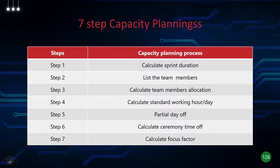Now, capacity planning — this is another thing the scrum master does during sprint planning. Capacity planning involves planning the team's capacity to see if they can take up the story points. It's usually a seven-step process. Step 1: calculate the sprint duration. Step 2: list all team members. Step 3: calculate team member allocation — which team member is taking up which stories.